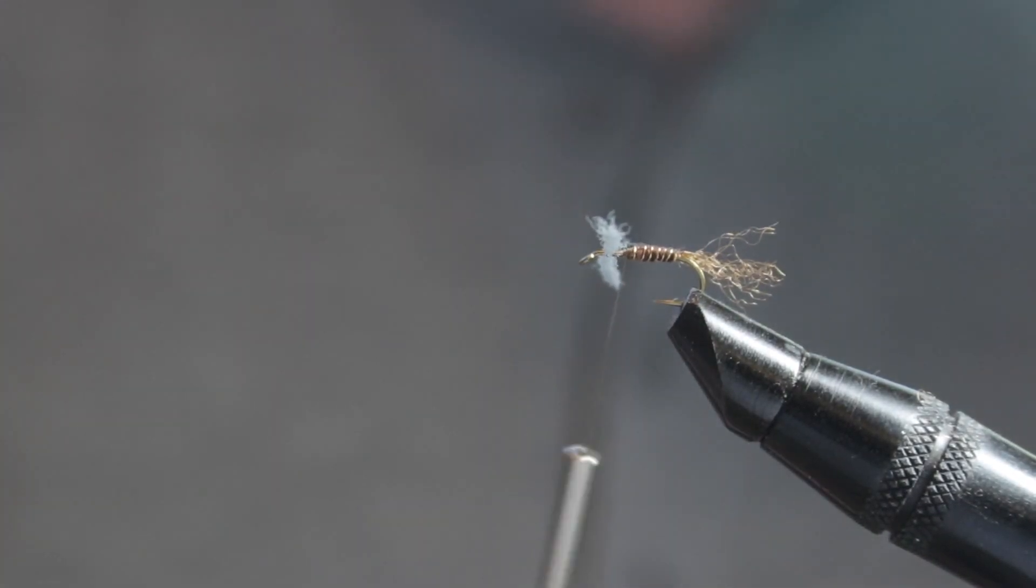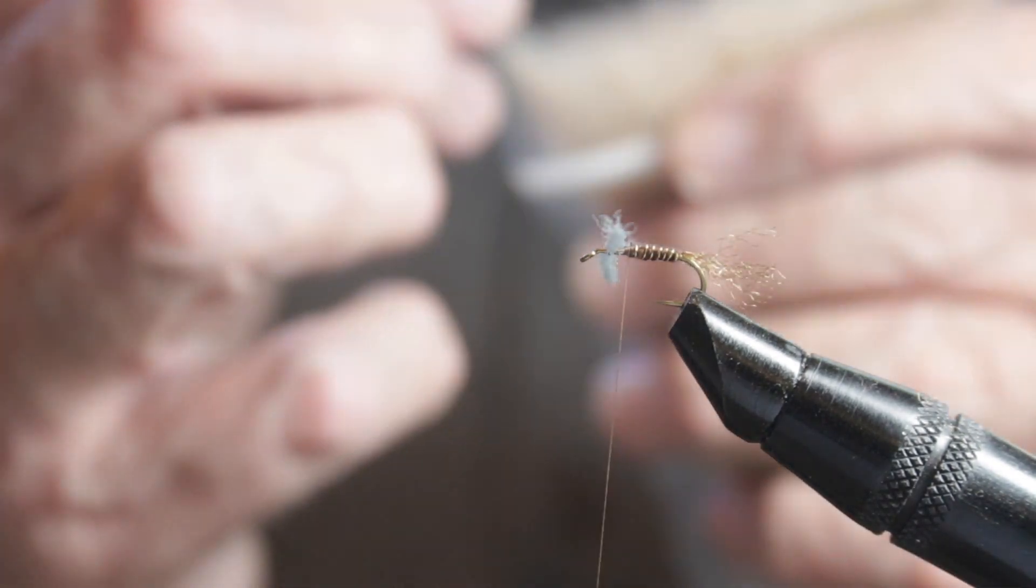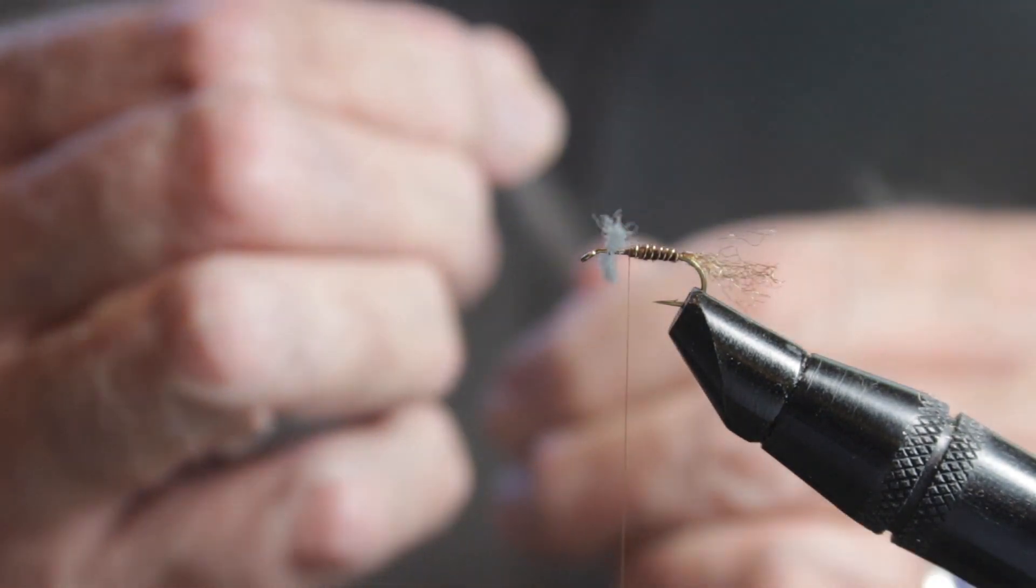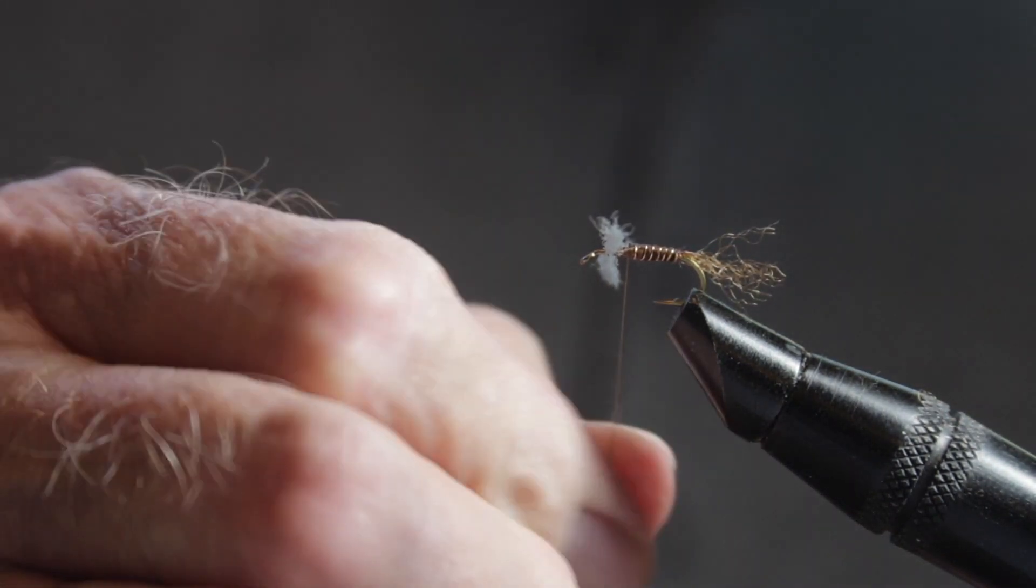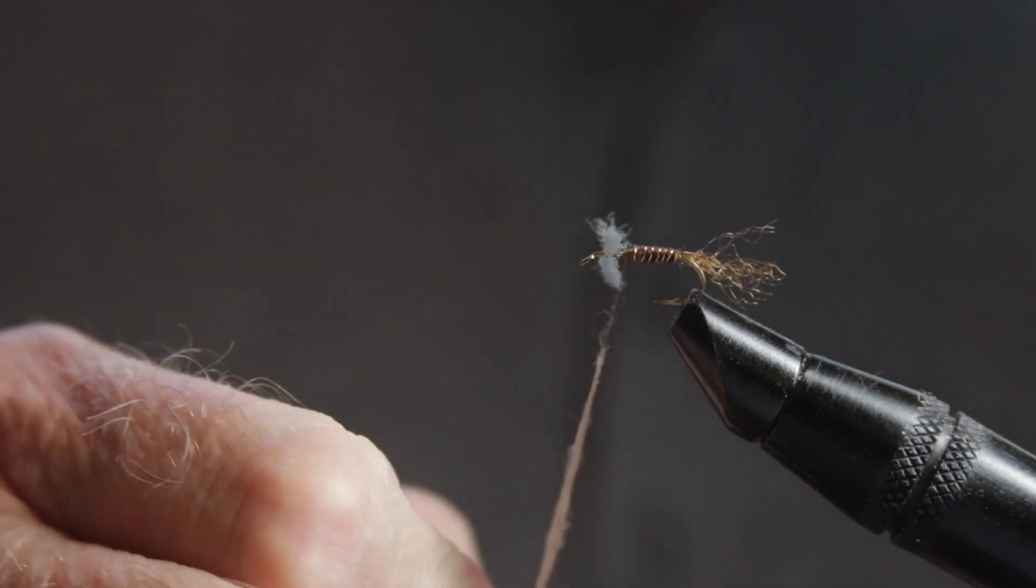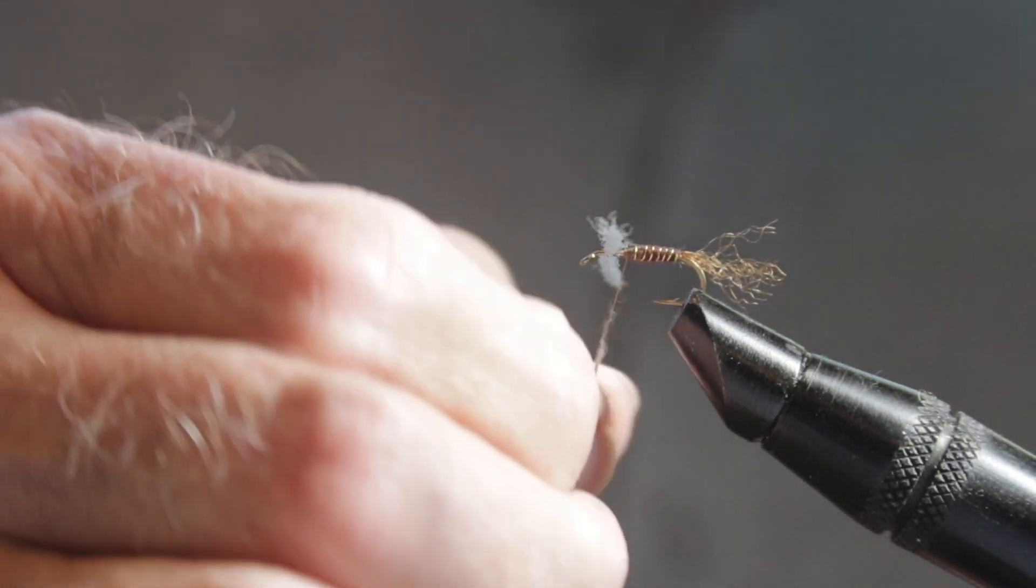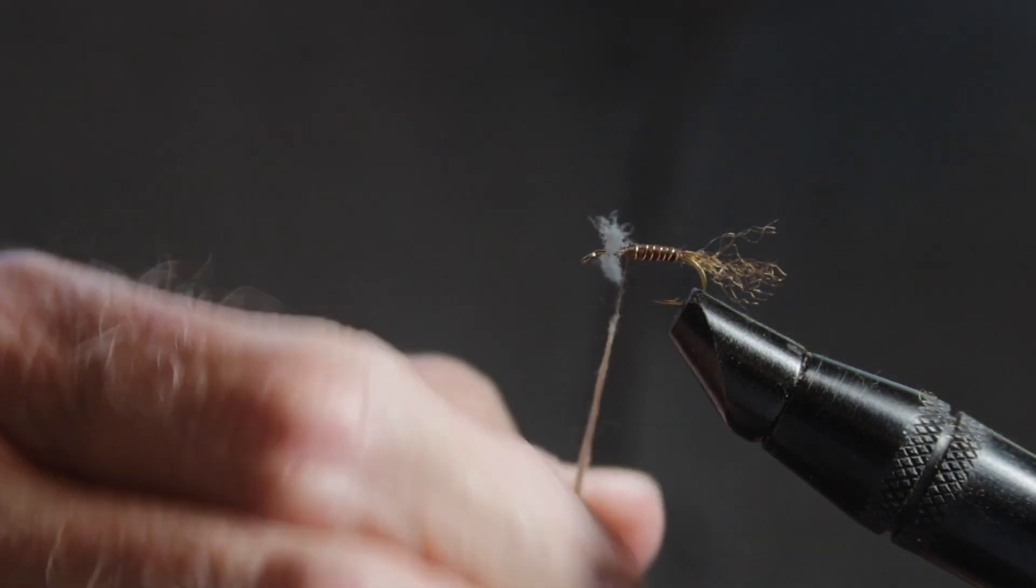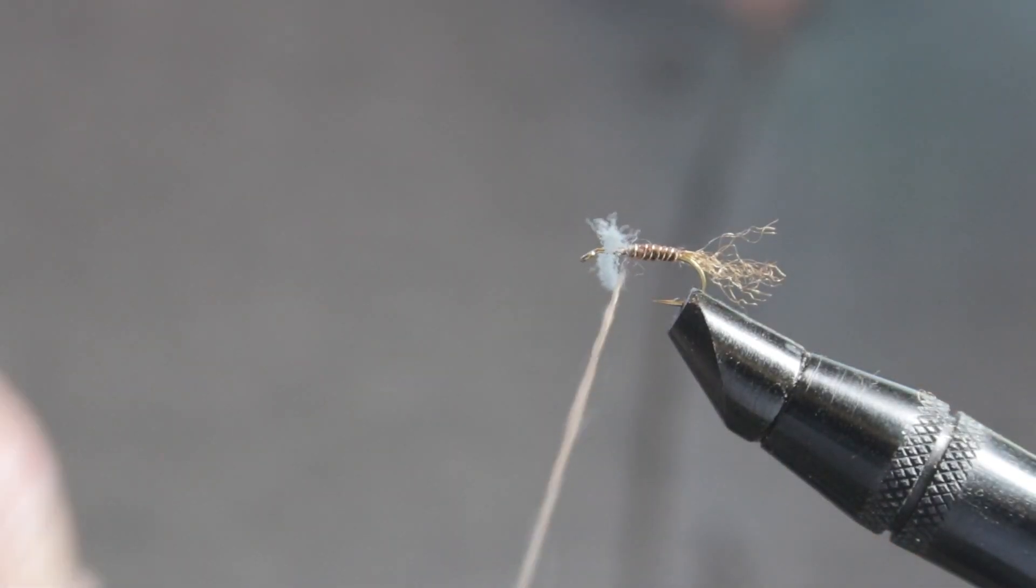And get ready for our other dubbing, which is a light tan. Once again, a superfine. We're going to tie this kind of thick, so it makes a thick thorax. What I like to do is I wind the dubbing behind the wing and then in front of the wing before I start taking the figure eight wraps over it.